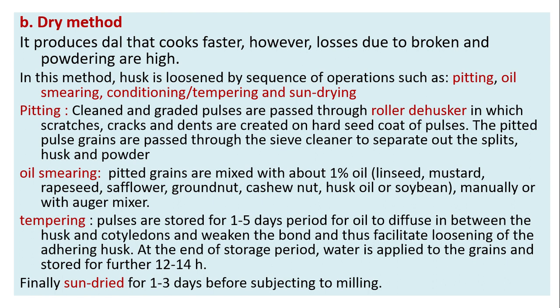Pitting: clean and graded pulses are passed through a roller dehusker in which scratches, cracks, and dents are created on the hard seed coat of pulses. The pitted pulse grains are then passed through a sieve cleaner to separate out the splits, husk, and powder.